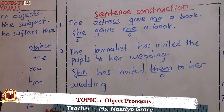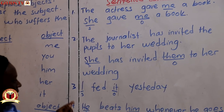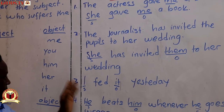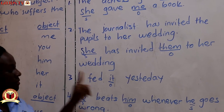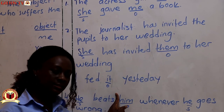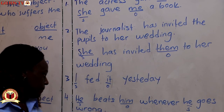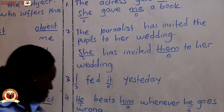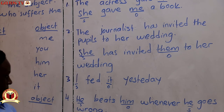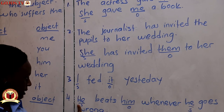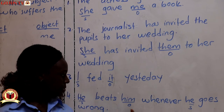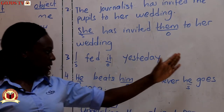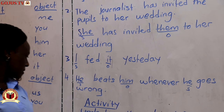Another example: 'I fed it yesterday.' The subject is 'I' and the object is 'it'. And: 'He beats him whenever he goes wrong.' Here 'he' is the subject and 'him' is the object. The second 'he' here is also a subject.